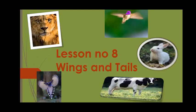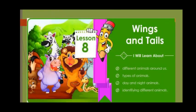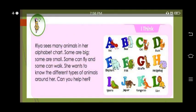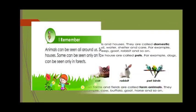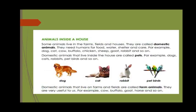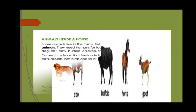Good morning, children. In our last session, we started lesson number 8 — that is 'Wings and Tails.' In that, we learnt about animals which we can see all around us: dog, cat, rabbit, and pet birds. These animals live inside our house and are called pet animals.